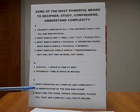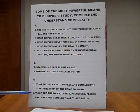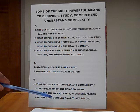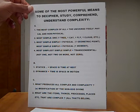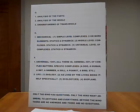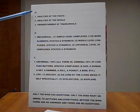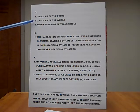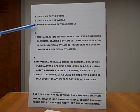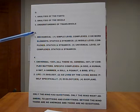We'll go to C. What produces all complex and complexity? A. Modification of the non-God divine. Number two, what are the items, things, processes, places, etc. that are complex? Everything that is written below. After this particular statement right here. Now, D. Also methods. Number one, analysis of the parts. Two, analysis of the whole. Three, understanding of transhold.